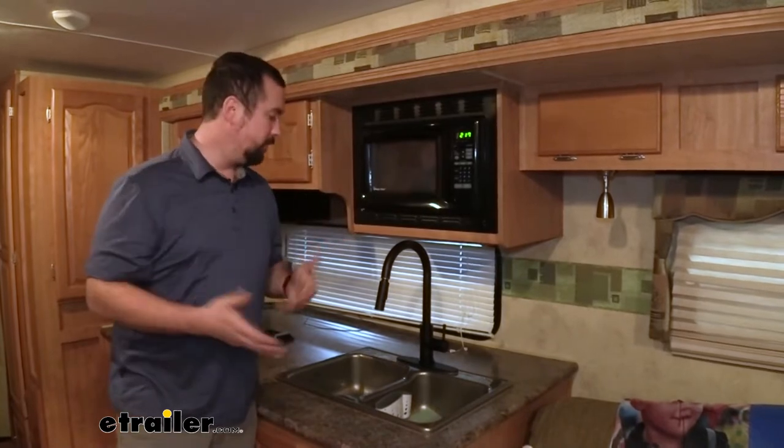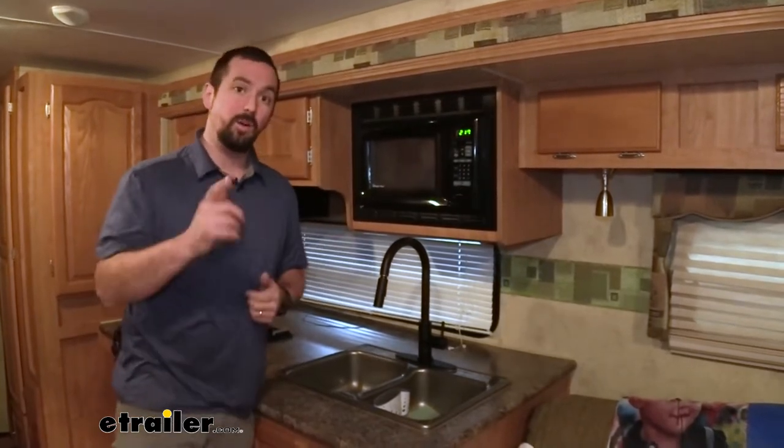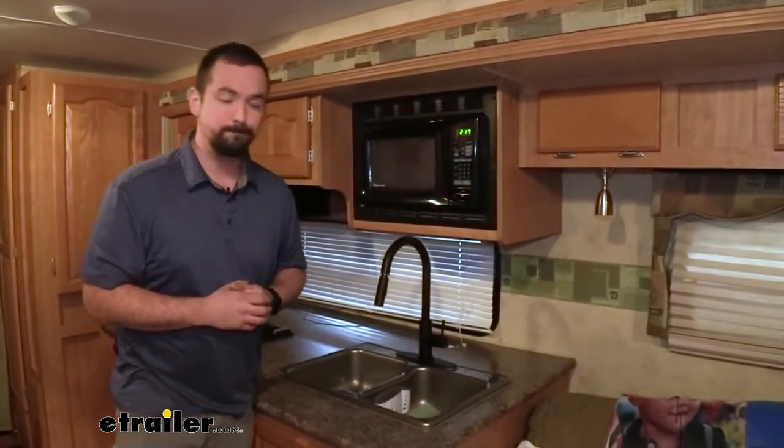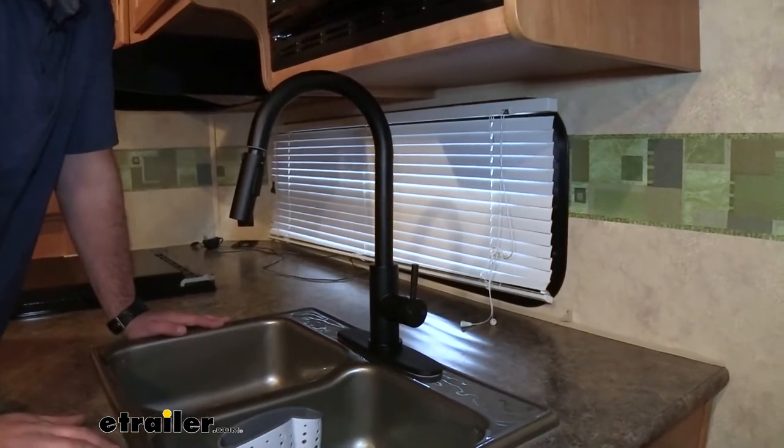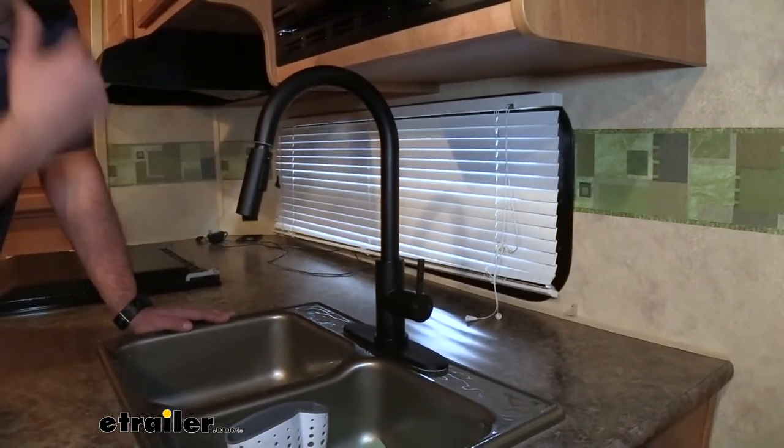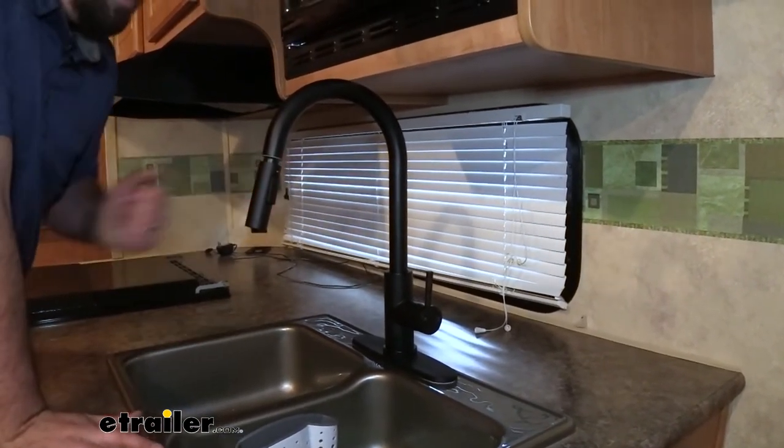This is available in a nice matte black finish and also brushed nickel. Most campers don't have a dishwasher and that's where this comes into play, whether you're updating your kitchen or replacing a broken one.